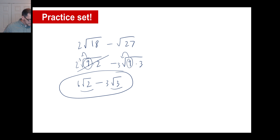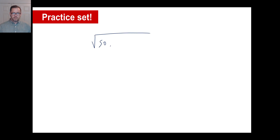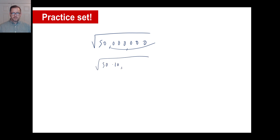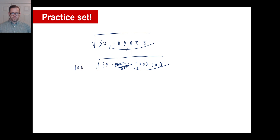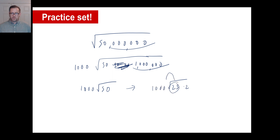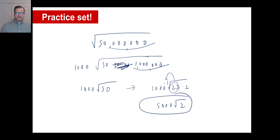Pause it and try C: the square root of 50 million. Focus on the number of zeros — there are six of them. Write it as 50 times 1,000,000. The million has six zeros, so the square root has three zeros: 1,000 on the outside. That gives 1,000 times the square root of 50. We don't want to leave 50 there, so break it down into 25 times 2. The square root of 25 is 5, so multiply by 5: 5,000 times the square root of 2. That is it — we're done. See you guys next time, have a good day.